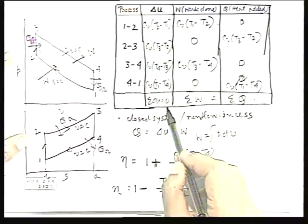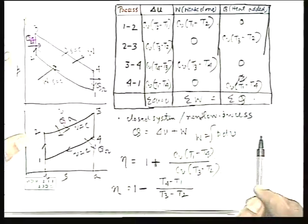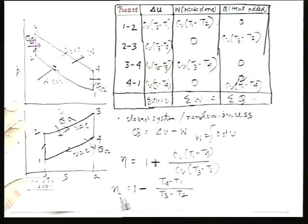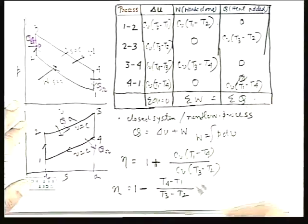Good morning. We were discussing the Otto cycle — the different processes and the expressions for internal energy change, work done, and heat added. We completed the table showing that ΔU for the cyclic process is zero, and ΔW equals ΔQ. We also wrote the expression for efficiency η in terms of the heat quantities.